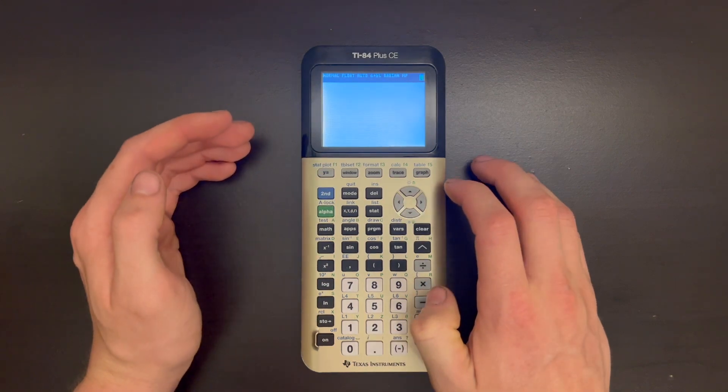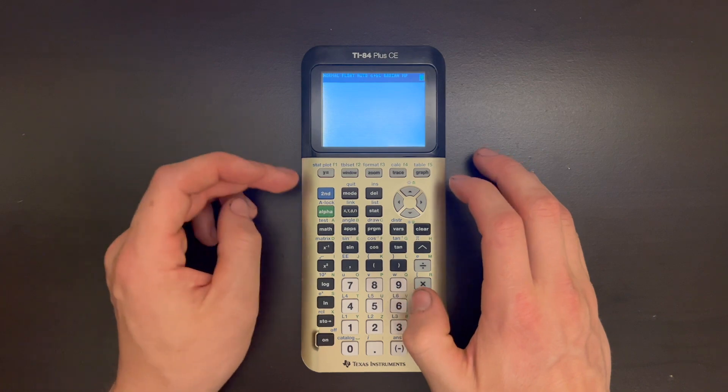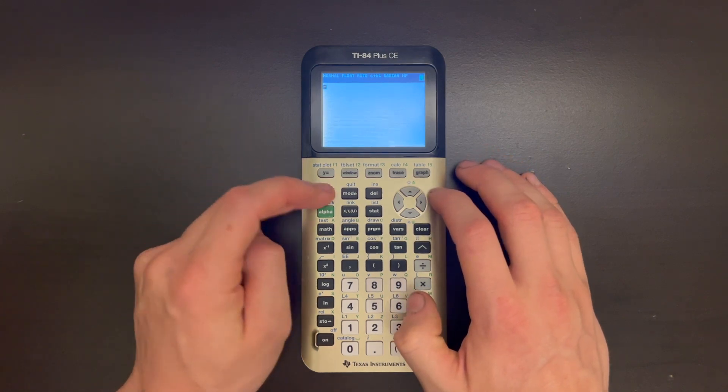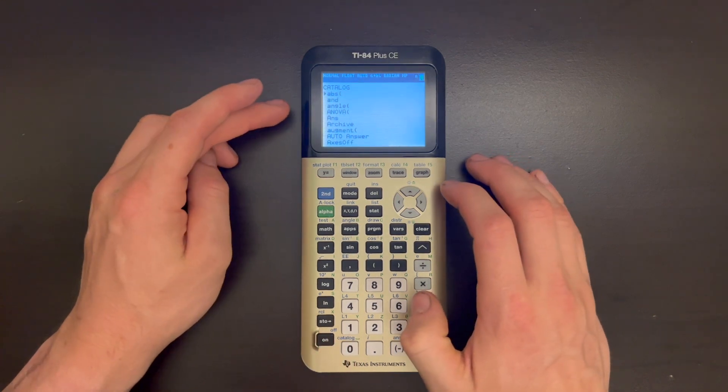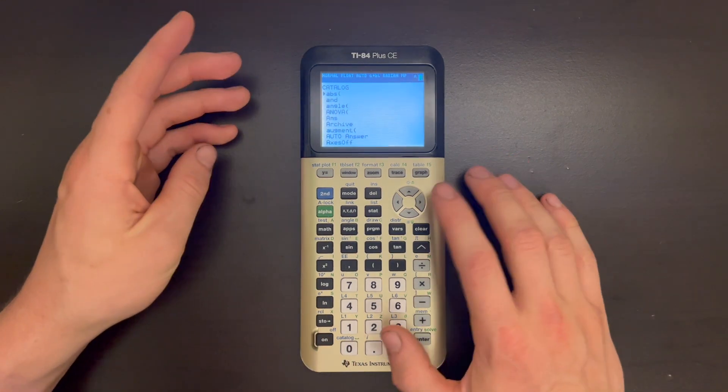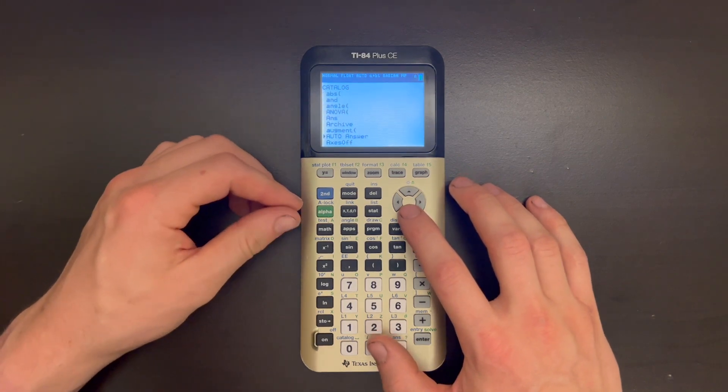But if you just want a complete list of all the functions or characters that you can type into your calculator, you can press second zero for catalog, and that'll bring up the catalog menu. And then from here you get this very long list, which you can scroll through using the directional pad.